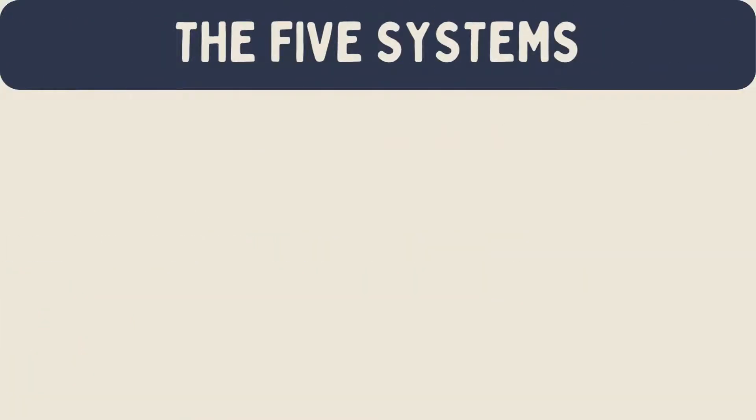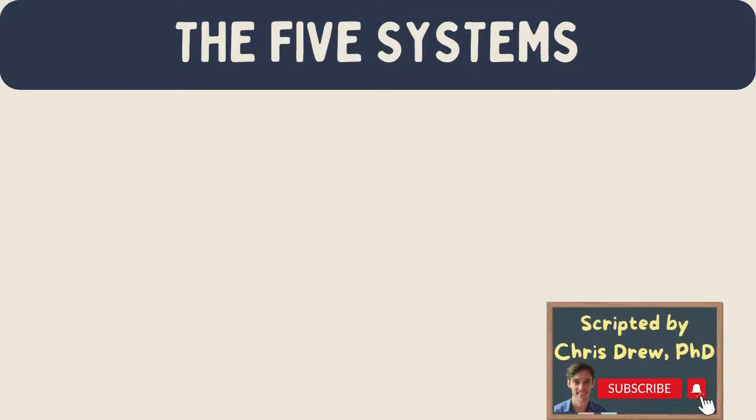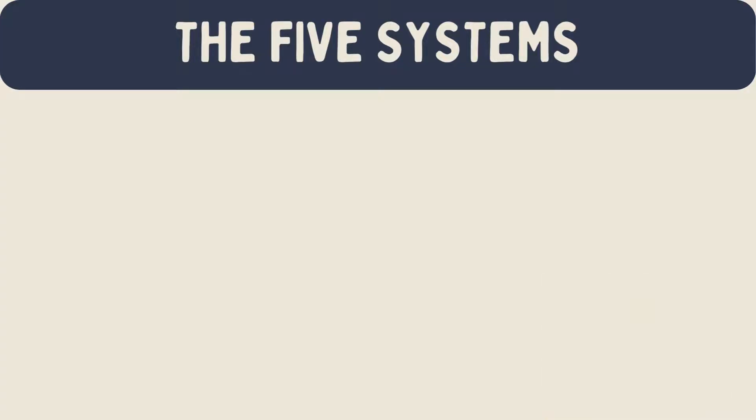Bronfenbrenner's theory includes five systems. Each system surrounds a person and influences them in different ways. Let's look at each system.